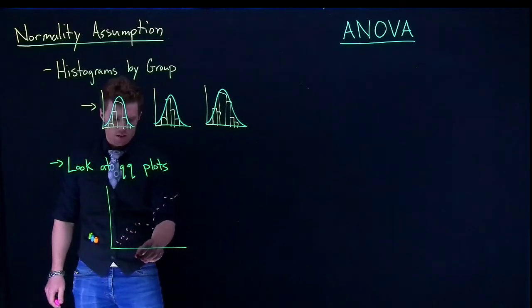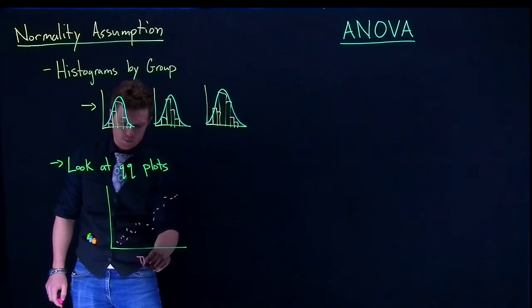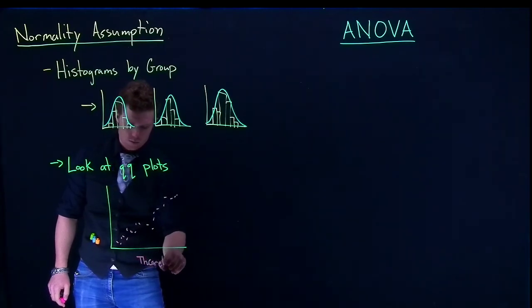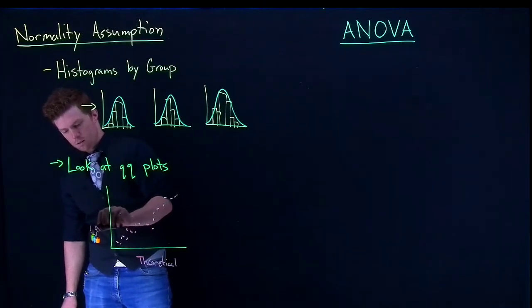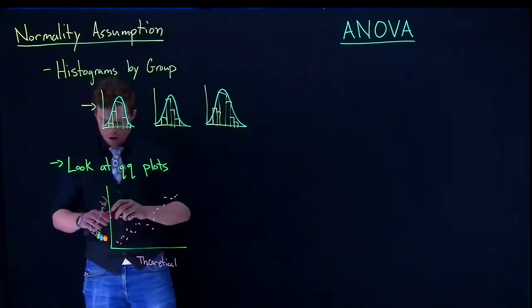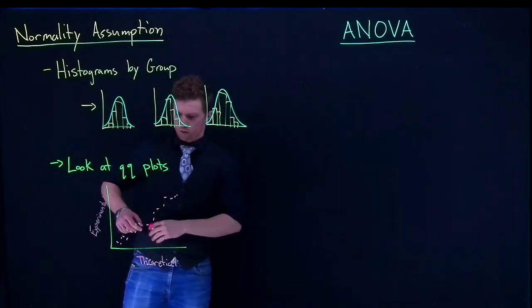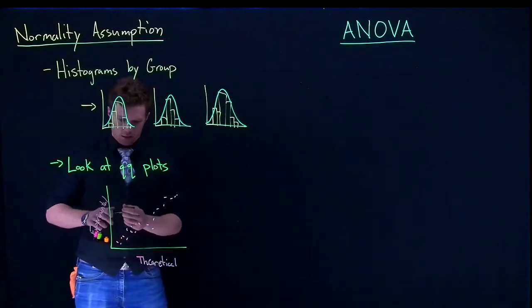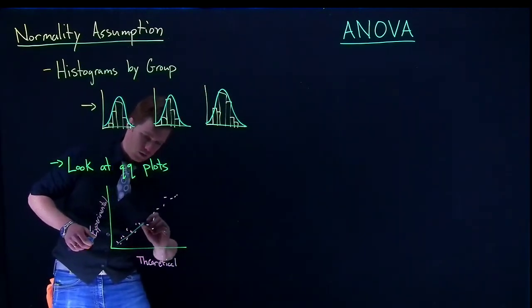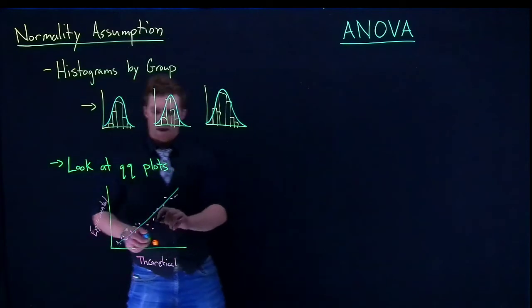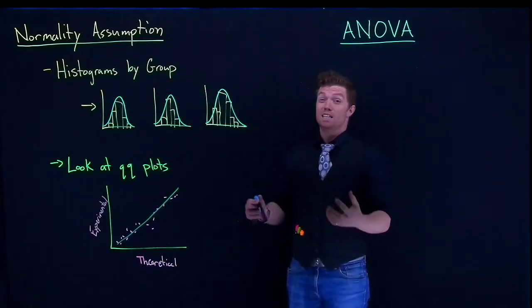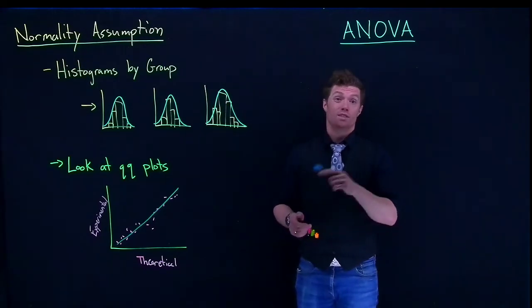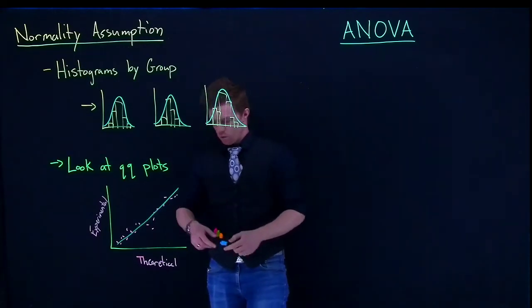And so this will be the theoretical on the bottom, and this will be the experimental. And what we're looking for, is we're looking for this guy to basically follow some sort of straight line. Now there can be a little bit of deviation from the line. But if there's a big deviation from the line, we've got a problem, or if we see some sort of big pattern.